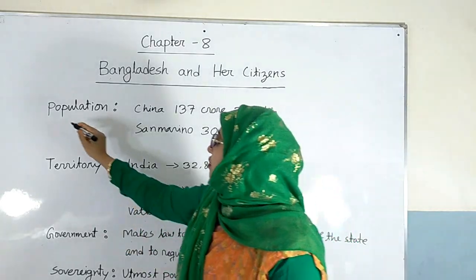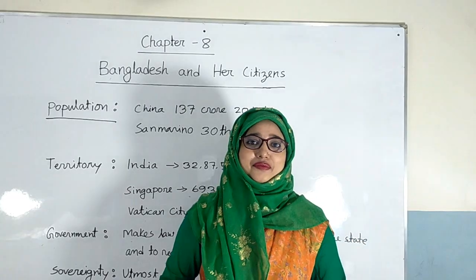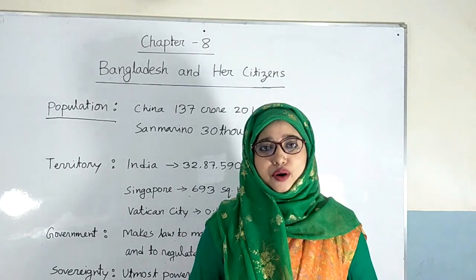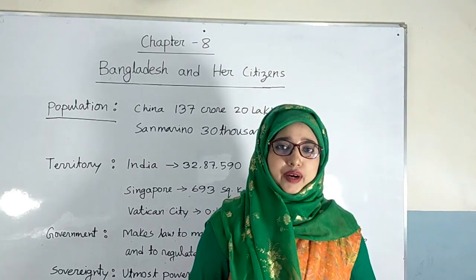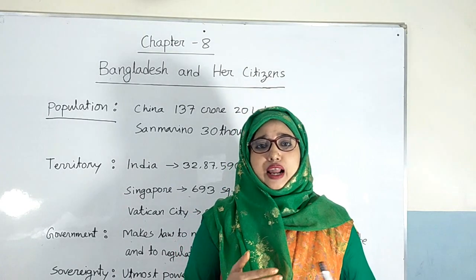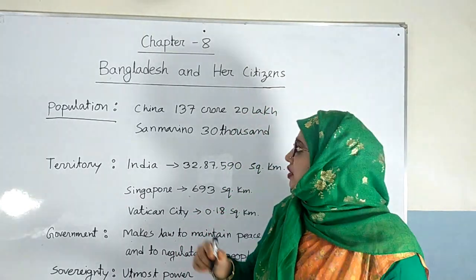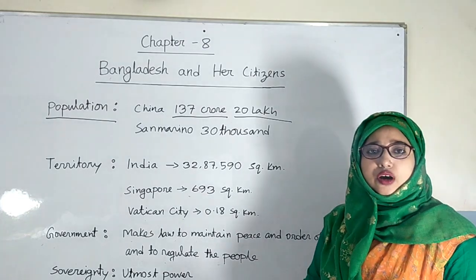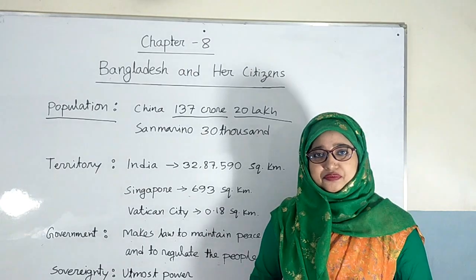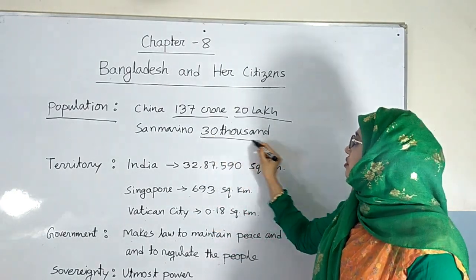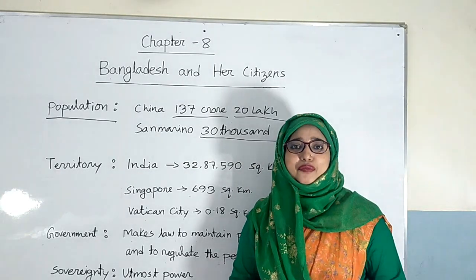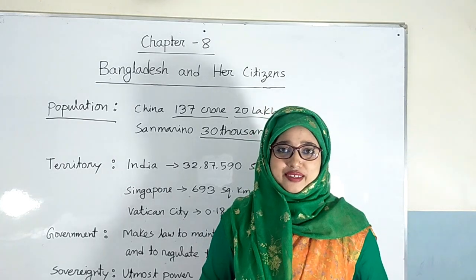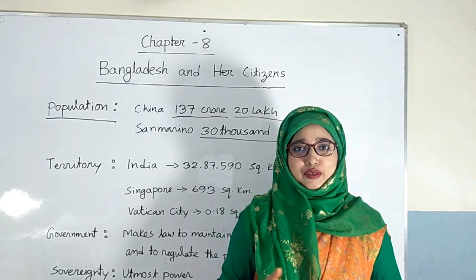Population is the first component of a state. It is the most important component to form a state. Without population, a state cannot be formed, so population is called the soul of a state. The number of population is not limited. We see that in China there are 137 crore people living according to the World Population Data Sheet 2015, and in Nauru there are only 30,000 people living. So there is no limitation on the number of population to form a state.